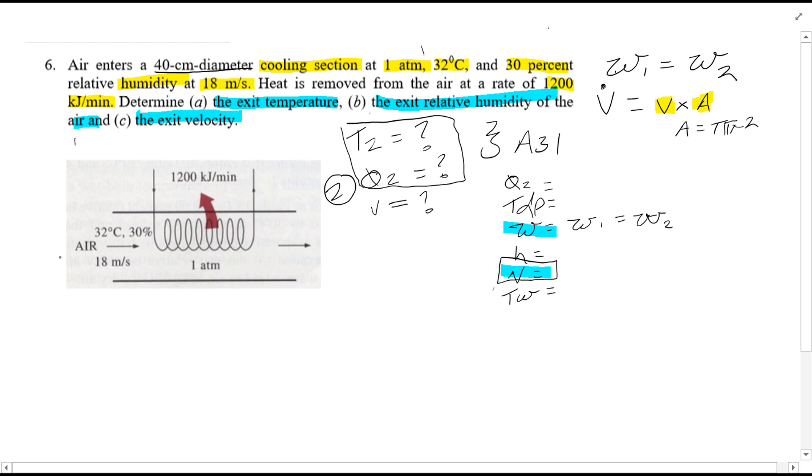Let's return to what we're given. We know at point 1, the temperature is 32 degrees C and relative humidity equals 30%. So using chart A31, as you've seen in previous videos, what we find here is W1 is equal to 9 grams of H2O per kilogram of dry air. Remember, W1 is also our W2.